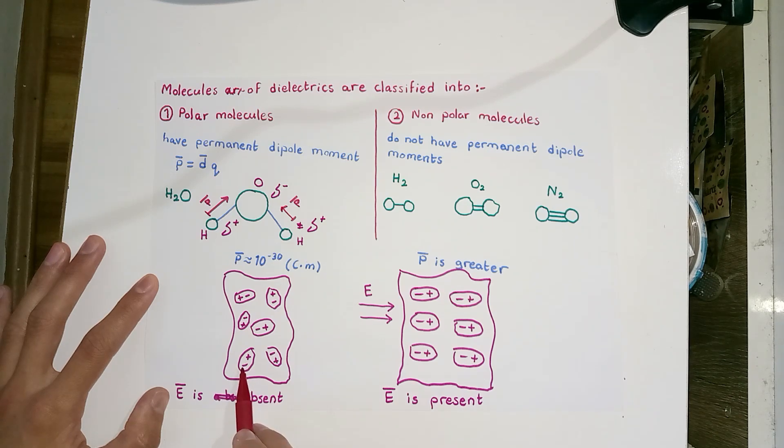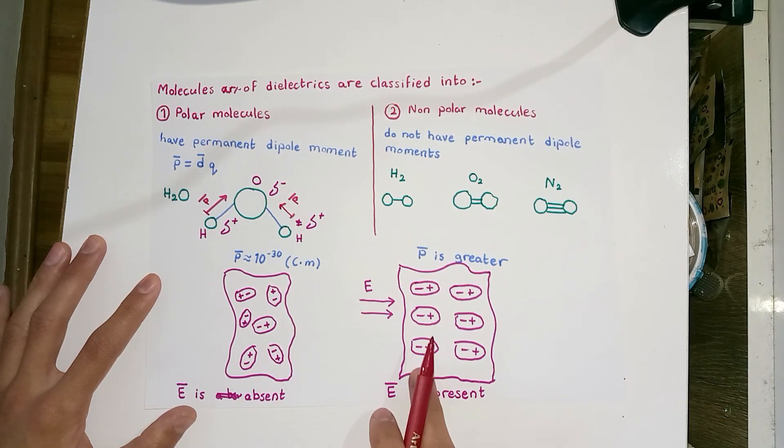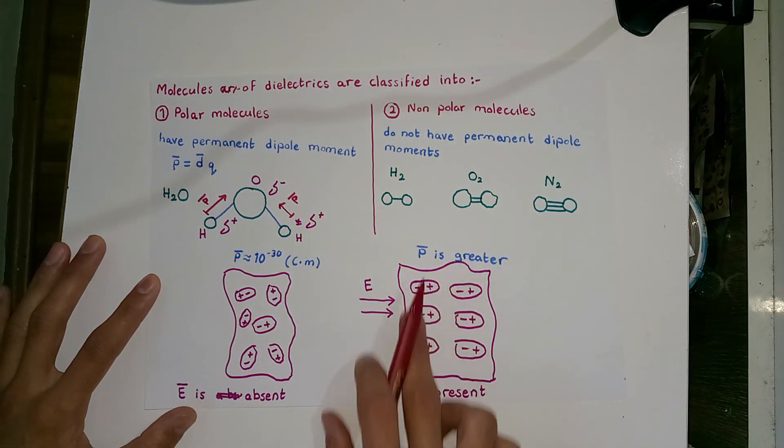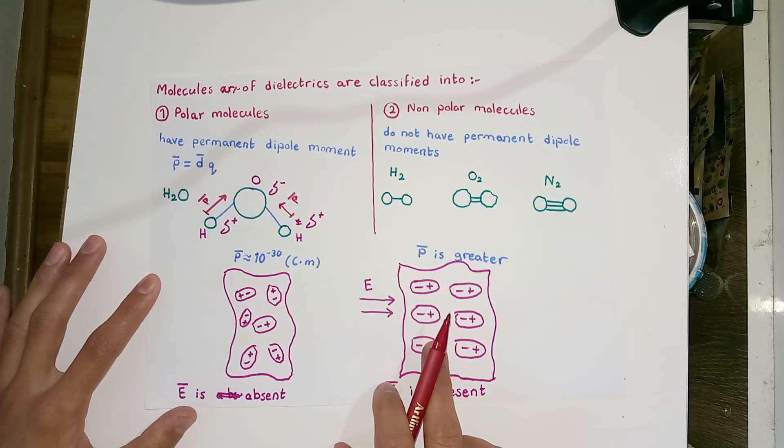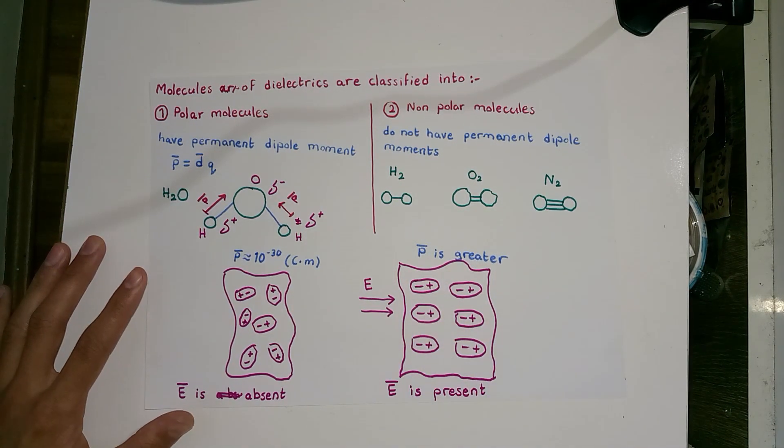When an external electric field is present, a torque will be exerted on the dipoles of the polar molecules and they will be aligned with the applied electric field.